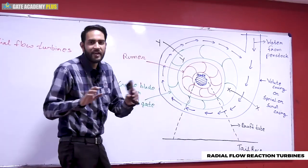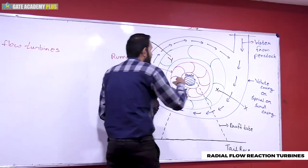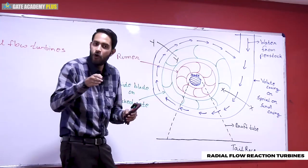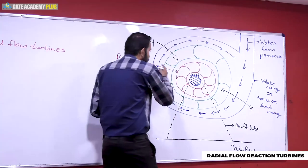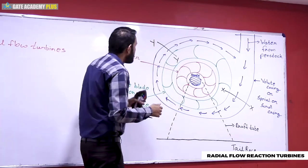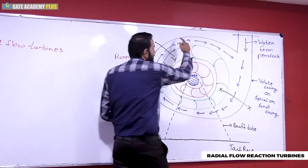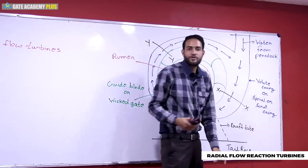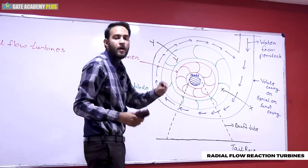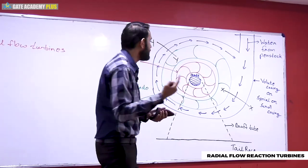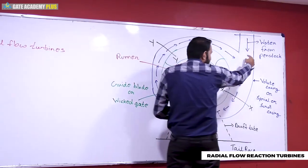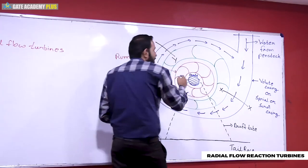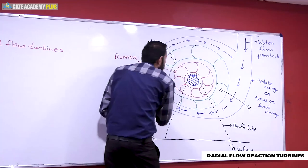The guide blades are fixed and the runner rotates. The flow is guided through the blades for shockless entry into the runner. This is our turbine casing — it is called a volute casing, spiral casing, or scroll casing. You can see it has a spiral shape. Water enters from the penstock and is distributed around the whole periphery. The guide blade acts like a nozzle, increases velocity, and water enters for shockless entry and rotates the runner.